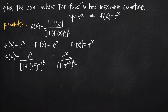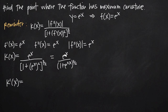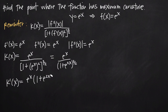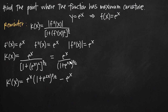To take the derivative of our curvature function we'll need quotient rule. For quotient rule, we take the derivative of the numerator first — the derivative of e to the x is still just e to the x — and multiply that by the denominator without changing it. Then we subtract, leaving the numerator as is, and take the derivative of the denominator. Taking the derivative of the denominator is going to require us to use chain rule.